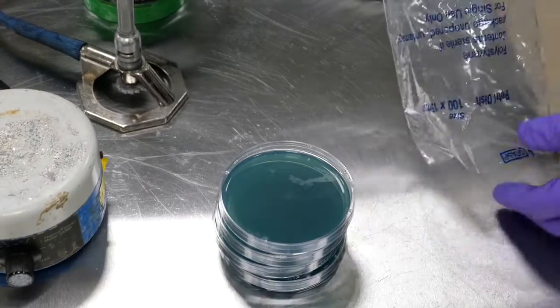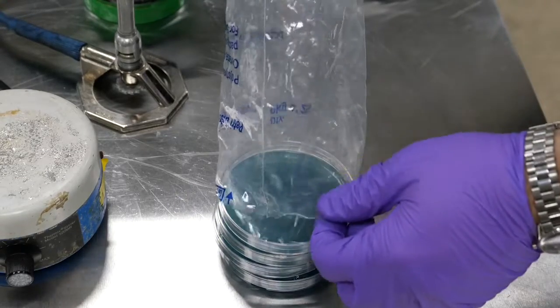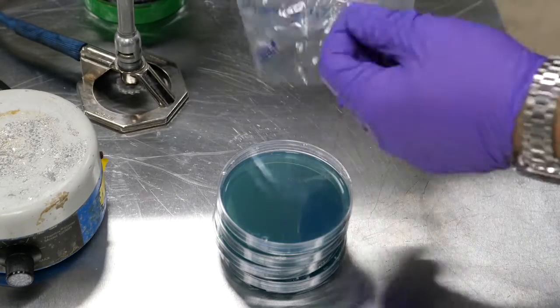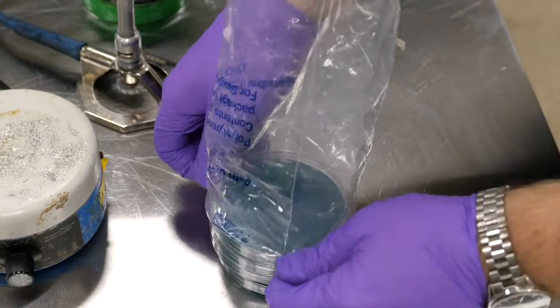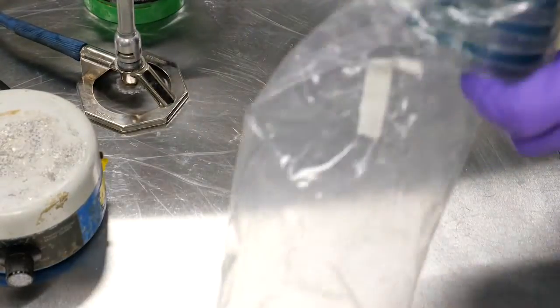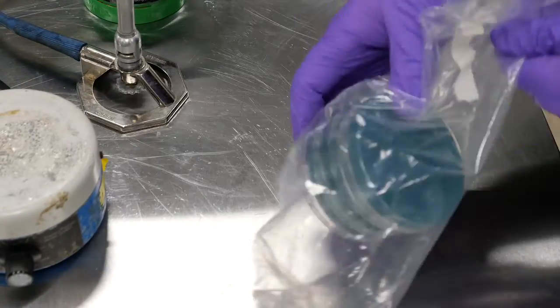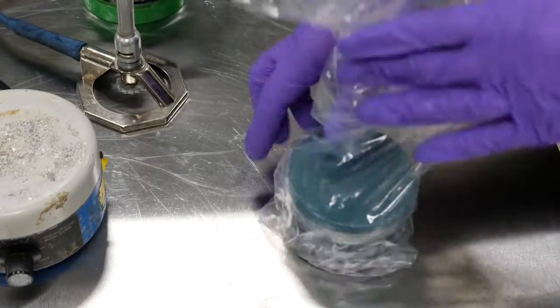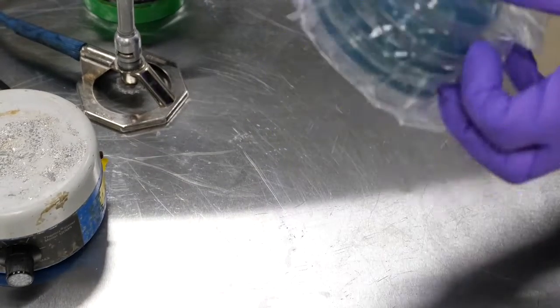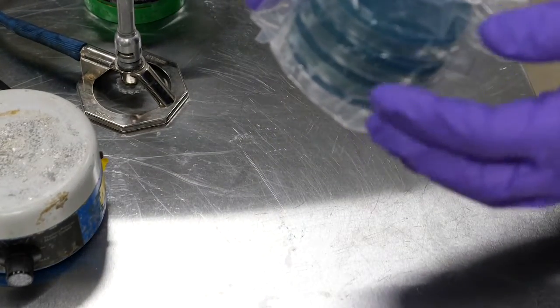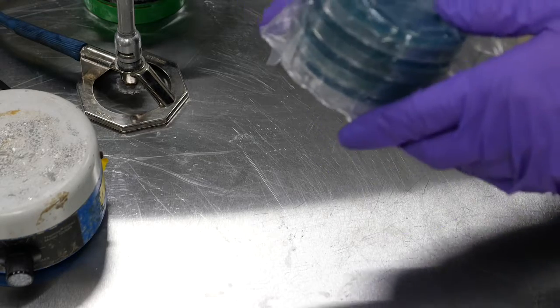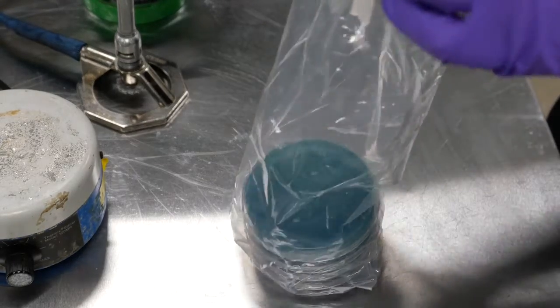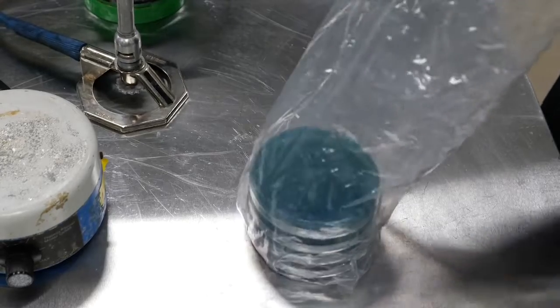And then to put them away, usually what I'll do is flip them over, put them back in that sleeve. And then when we store them, we want to store them facing with the agar side up, agar side down rather, so that any condensation doesn't get on the surface of that agar.